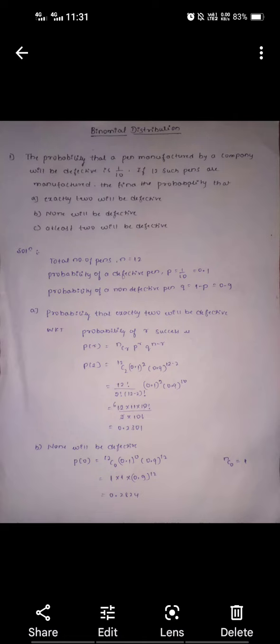So P(2) equals 12C2 times 0.1 squared times 0.9 to the power of 10. Solving this, you get the value 0.2301.